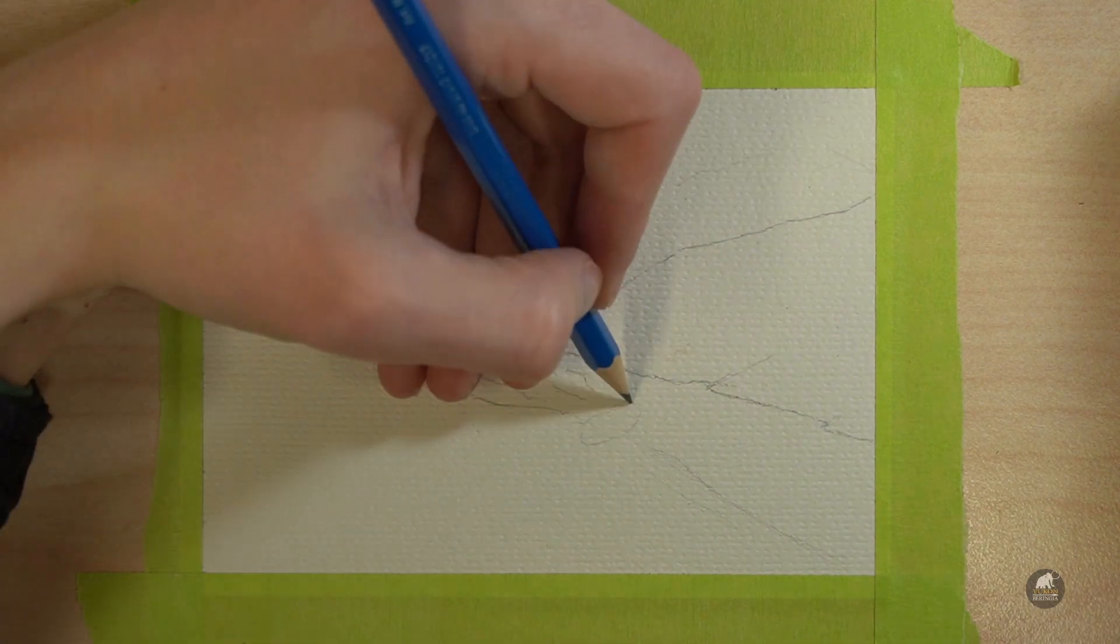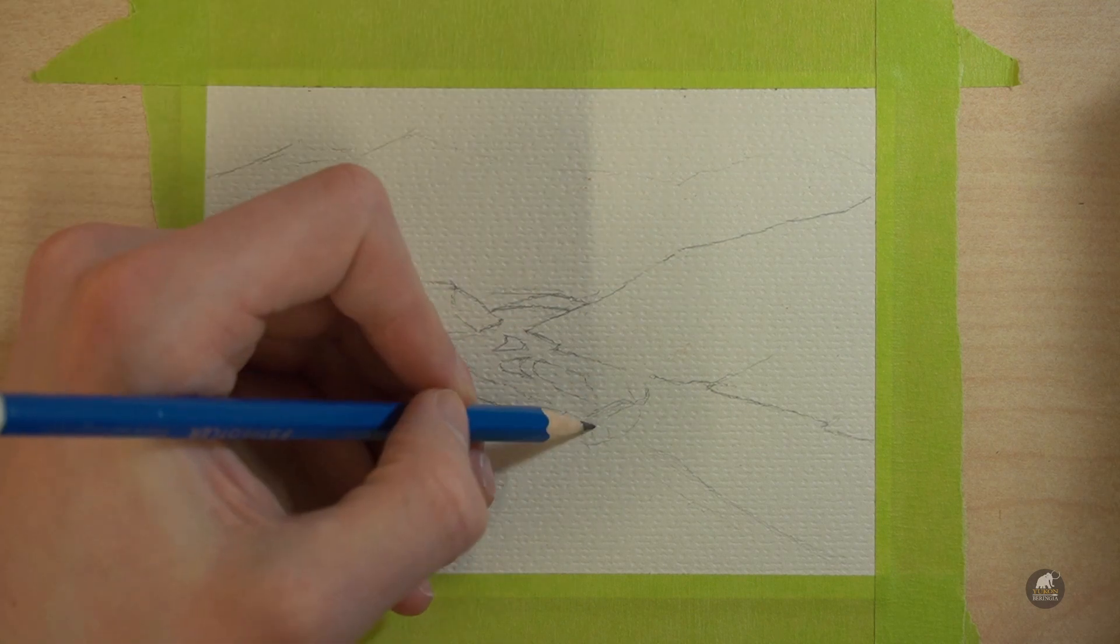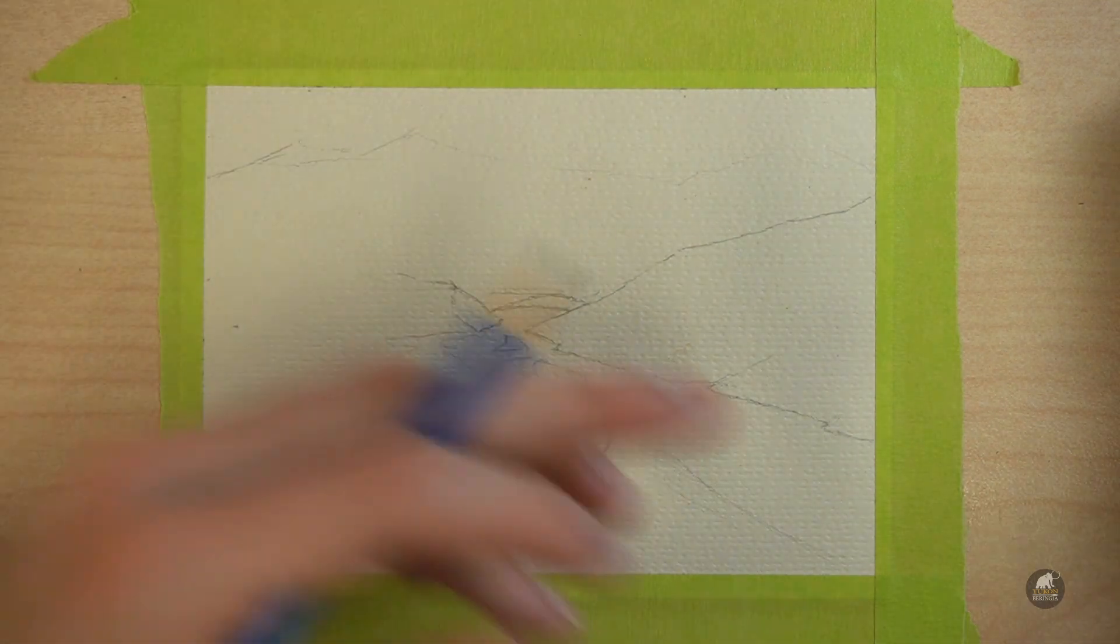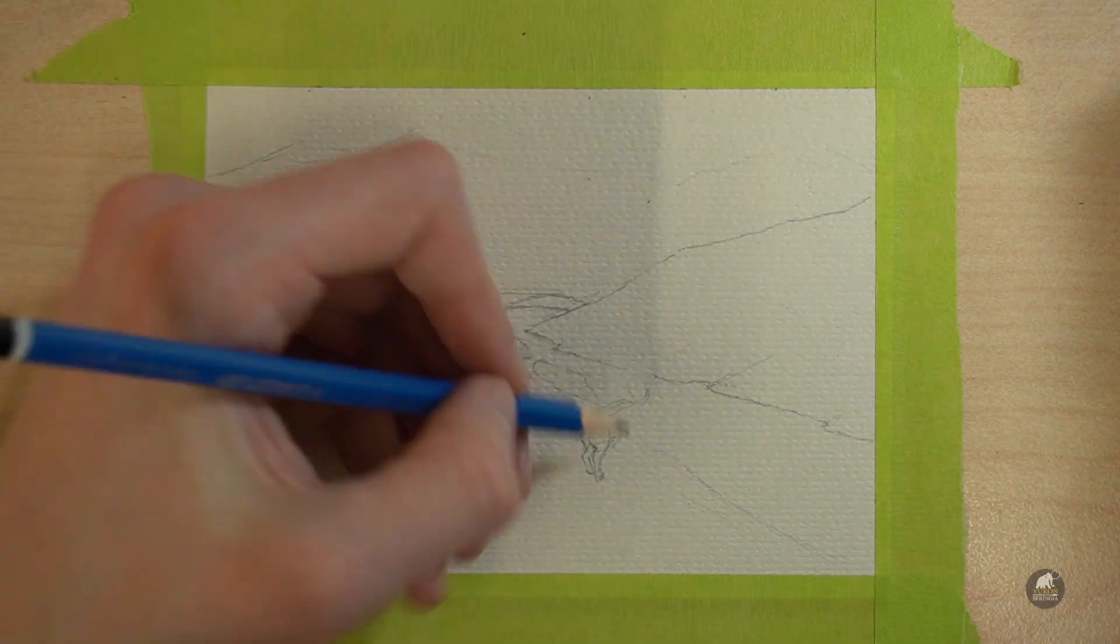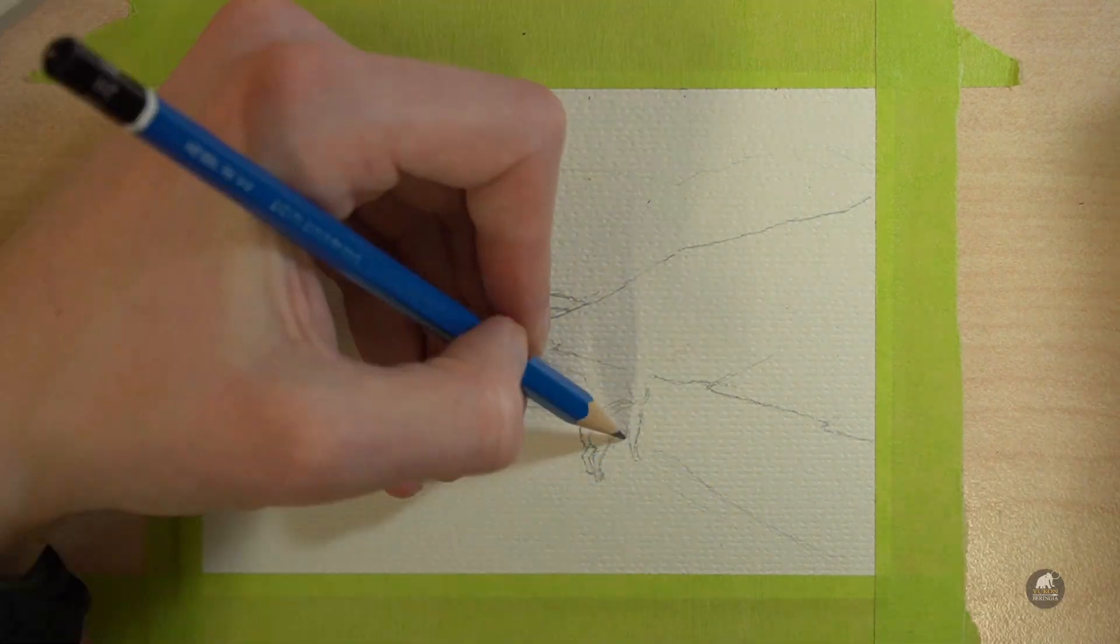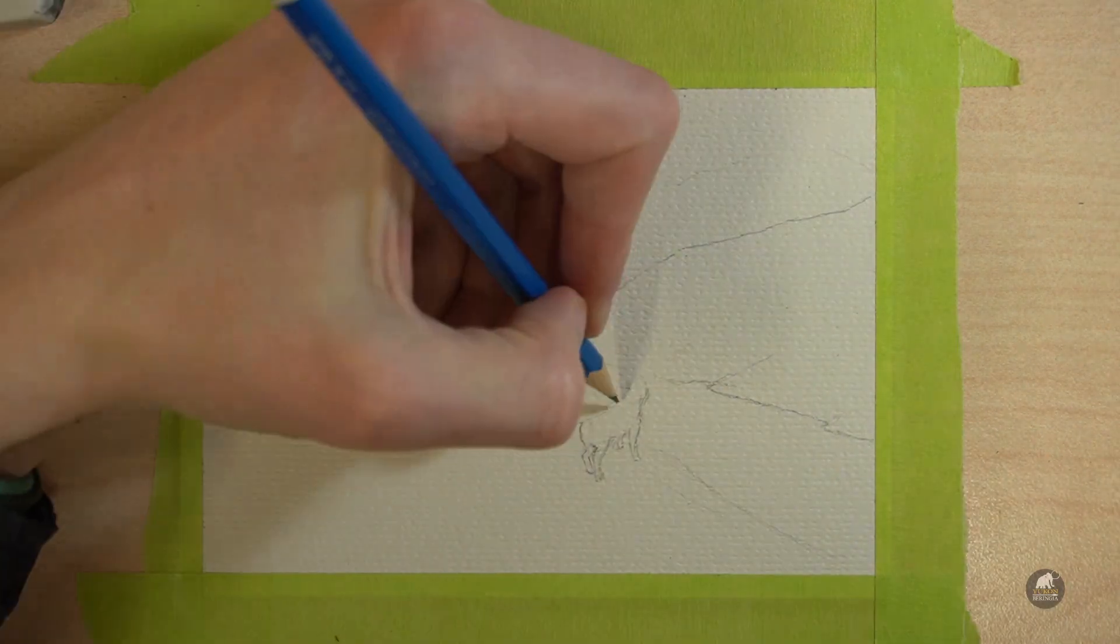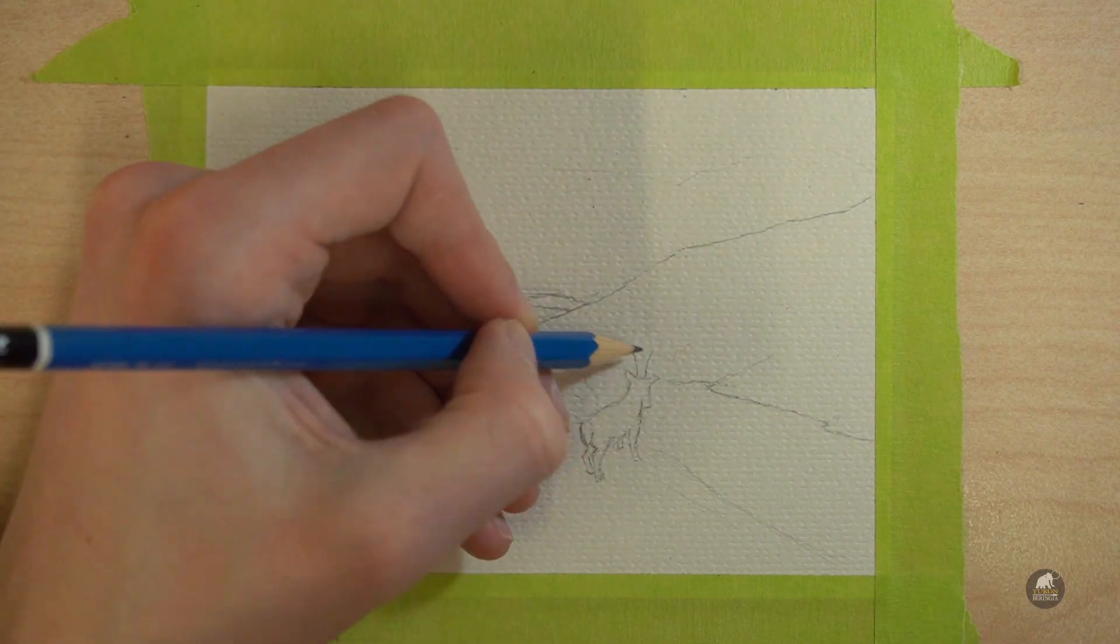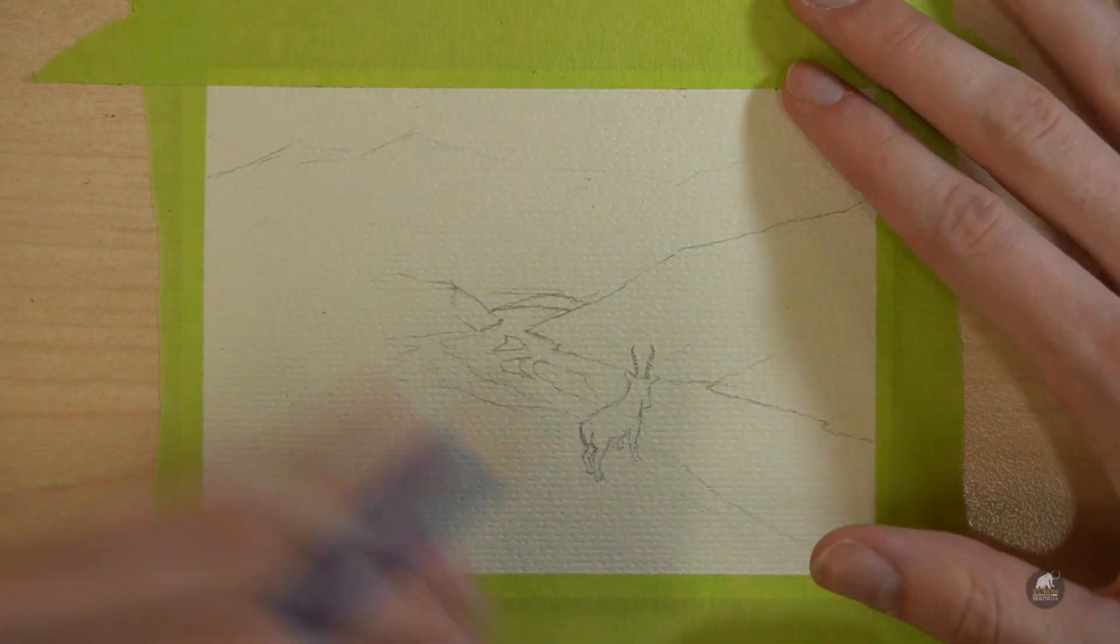And I'm adding our first saiga. So with complicated drawings like an animal, you want to really start with simple shapes. So you can see how I started off just by drawing the main body as pretty much just a big oval. And I added a little oval for the head. And then I kind of just added some ovals in for the upper legs and added the lower legs afterwards.